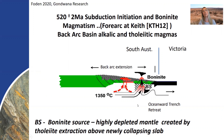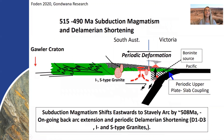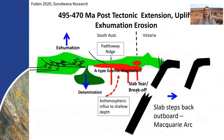We then had trench retreat in an oceanward direction into Victoria, and moving to 515 MA was really the commencement of actual subduction. With that trench retreat, subduction started in Victoria and you can see arc magmatism with the Stavely arc. Further magmatism occurred as well with fluids moving up from the subducting plate. Then 495 to 470 MA we had the break-off or tear of the subducting slab, and A-type granitic magmatism in the Pathway Ridge in South Australia marks the conclusion of subduction.